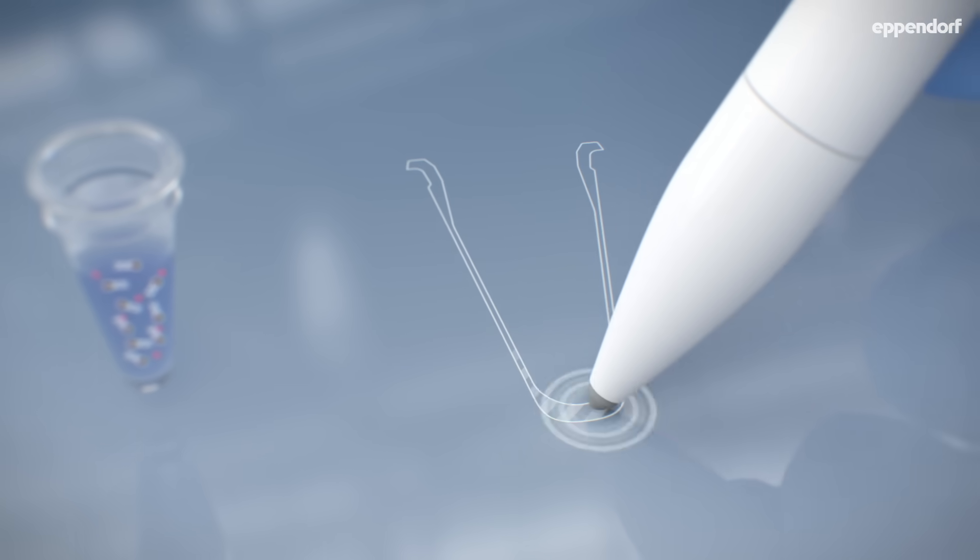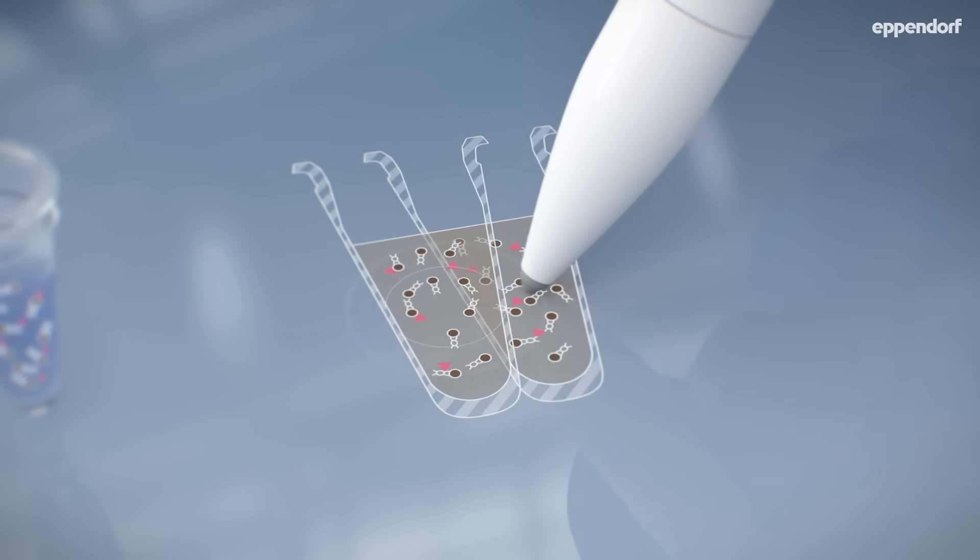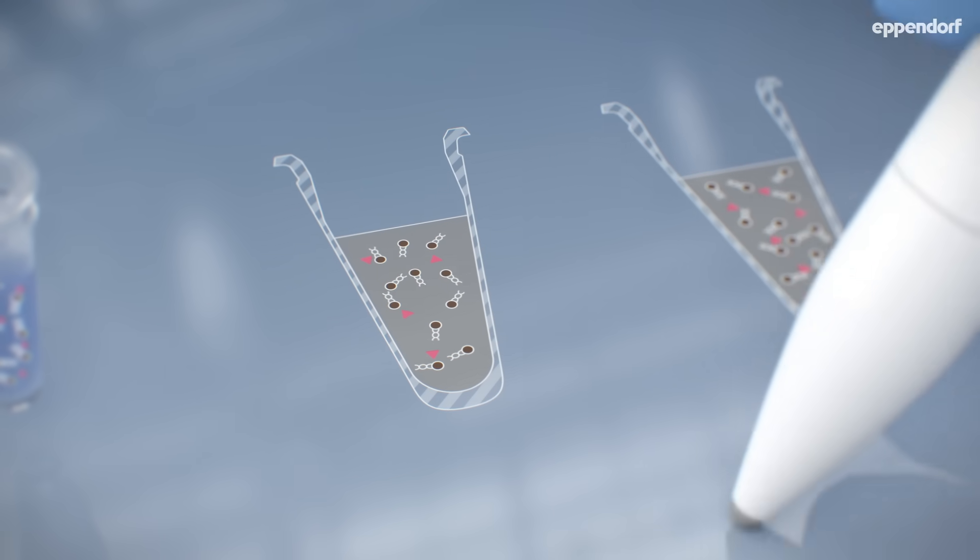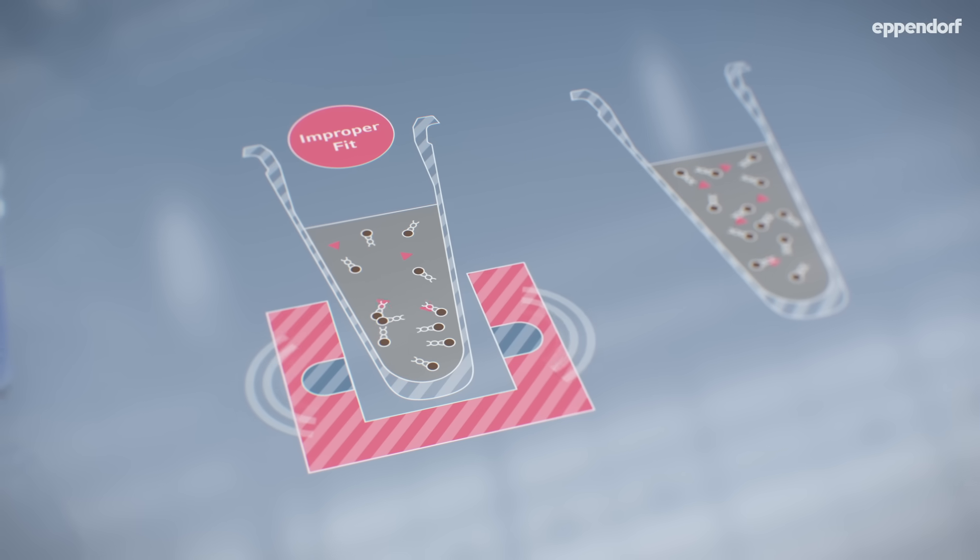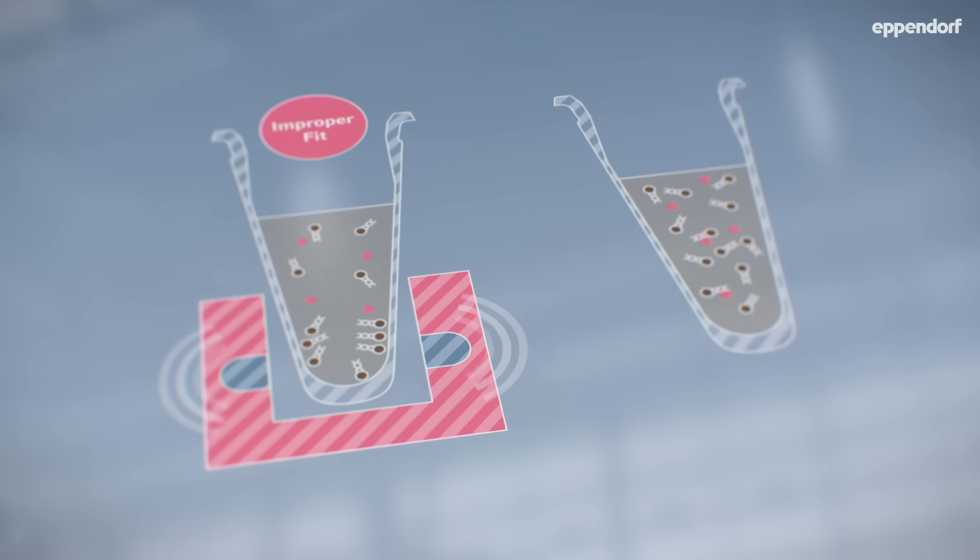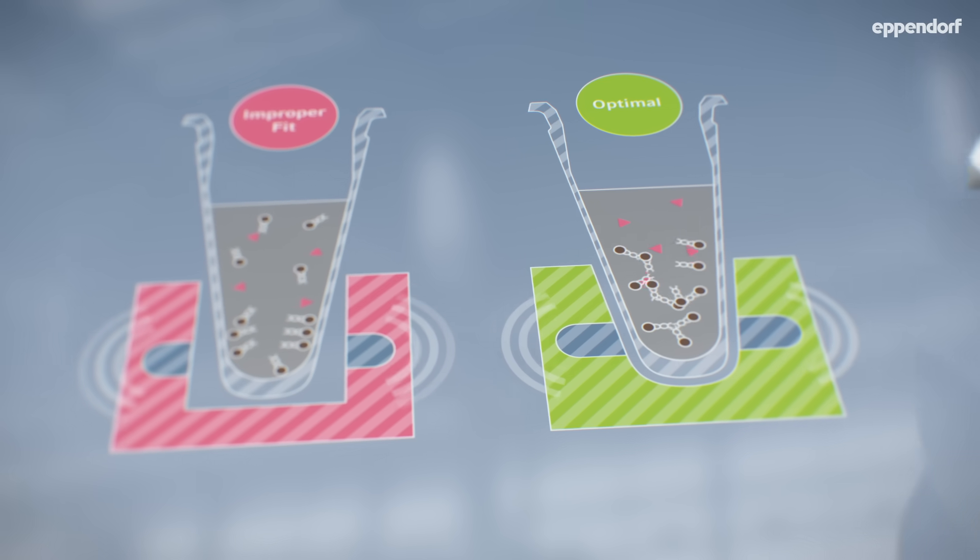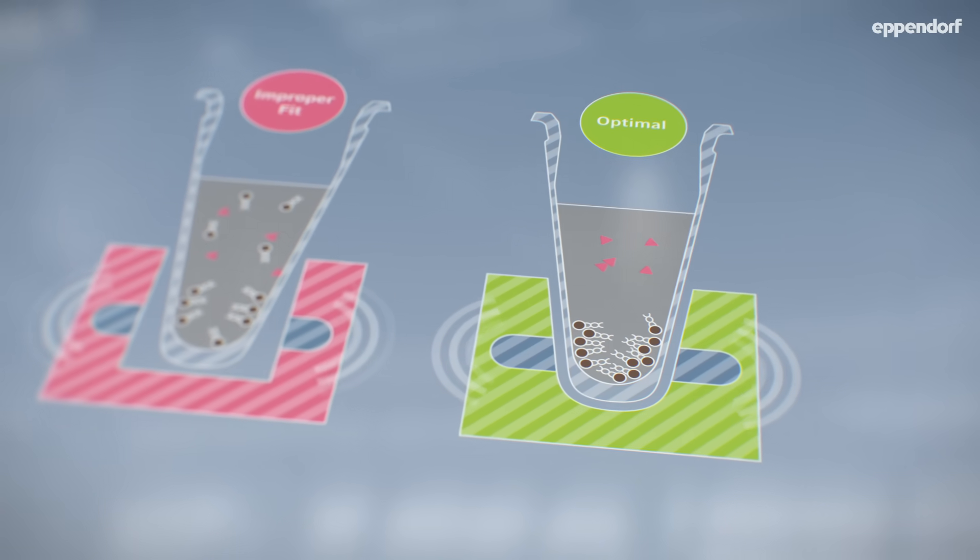Let's take a closer look. If the sample vessel does not have a good fit with a magnetic plate, some of the sample can be lost. For all of the sample to be recovered, it is important to have an optimized fit. The supernatant can then be removed without disturbing the magnetic beads.